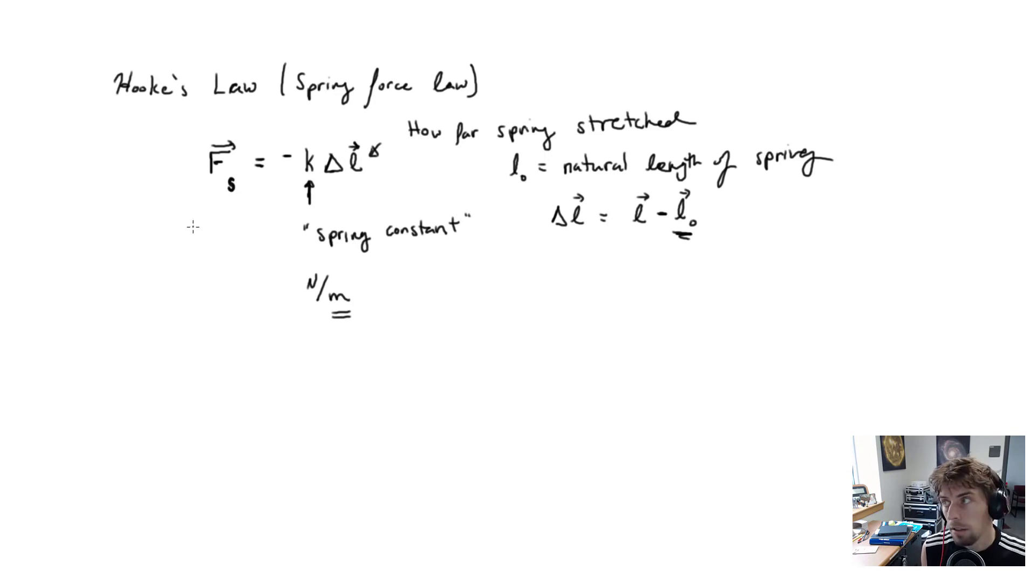Any spring has some unstretched length. If you just put it on the table, the spring will naturally be at some length. We usually call that L-naught, the natural length of the spring. What delta L represents is the stretch length of the spring, L, minus the natural length of the spring. How far the spring is stretched with respect to its natural length.